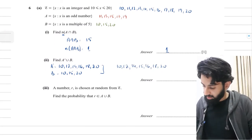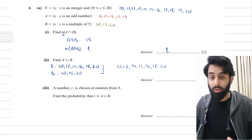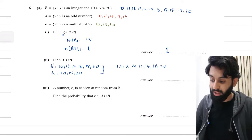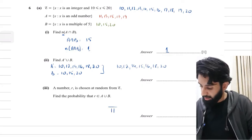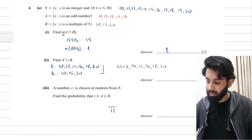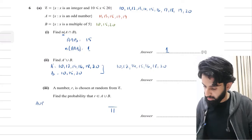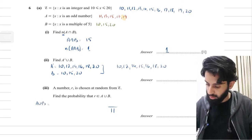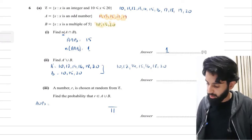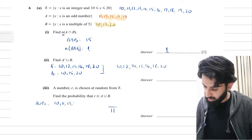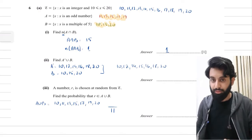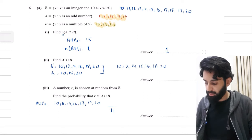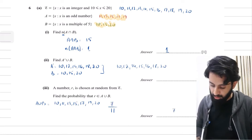A number r is chosen at random from the universal set. The total number of outcomes is 11, since counting 10 to 20 inclusively gives 11 numbers. Find the probability that r belongs to A union B. A ∪ B merges sets A and B: 10, 11, 13, 15, 17, 19, 20 — that's 7 favorable outcomes. So the probability is 7 over 11.